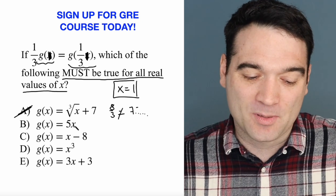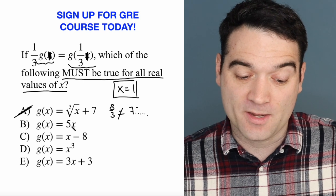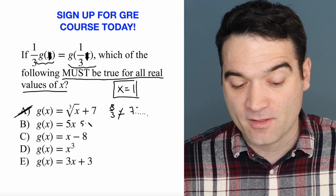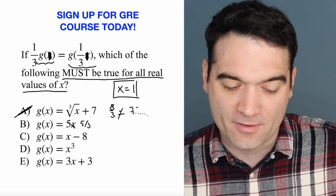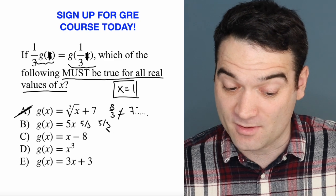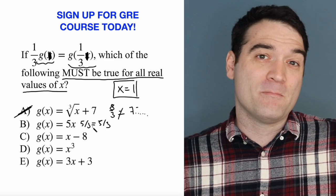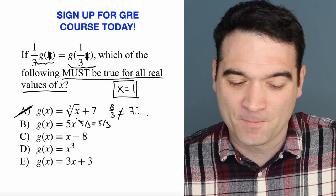Let's try this one. Plug in one here. g of one is five, five times one. One-third of that is five-thirds. Okay, so that's that. And then what's g of one-third? Well, g of one-third would be five times one-third or five-thirds. Okay, so these two are equal. Now, maybe there are multiple ones that are equal, so let's double-check these other ones just to be sure. We'll do it really quick.